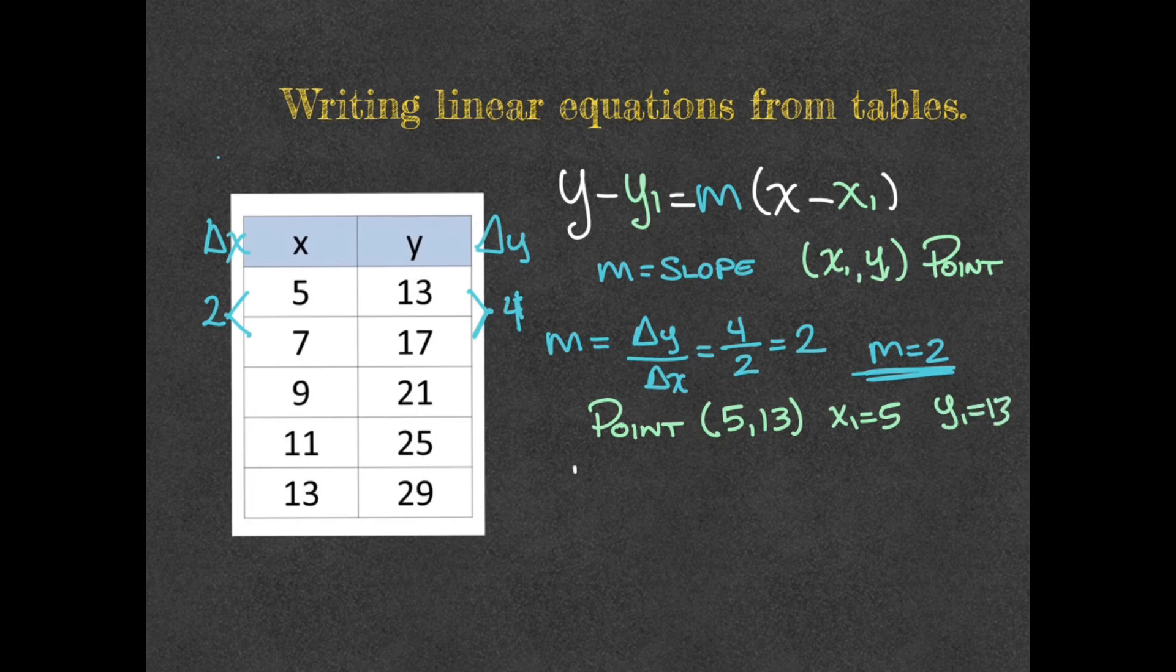I'm going to say y minus y1, which happens to be a 13, equals m, which is my slope, and I know that it was a 2, times x minus x1, which happens to be a 5.